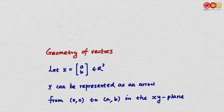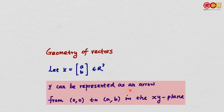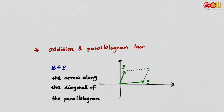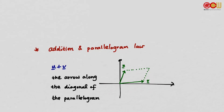In the last part of 1.1, let's talk about the geometry of vectors. Suppose we have a vector in R^2 with entries a and b. Then v can be represented as an arrow from the origin to the point (a, b) in the xy-plane. If we use this representation, it is very easy to get the sum of two vectors using the parallelogram law. Consider u + v: we form the parallelogram using vectors u and v, and the arrow along the diagonal is the vector u + v.